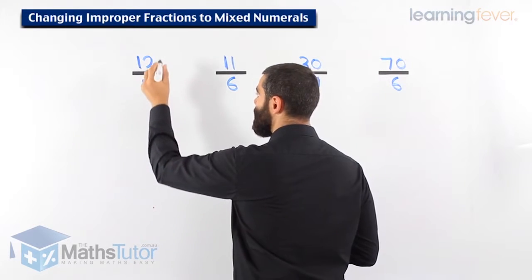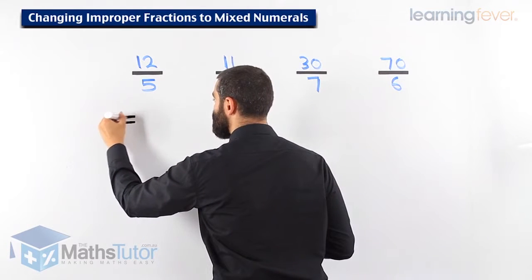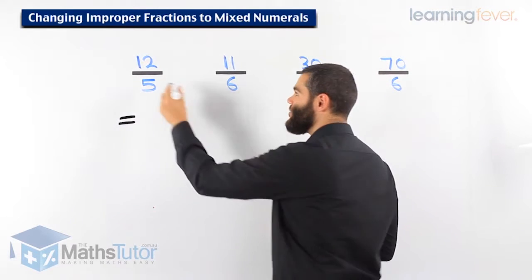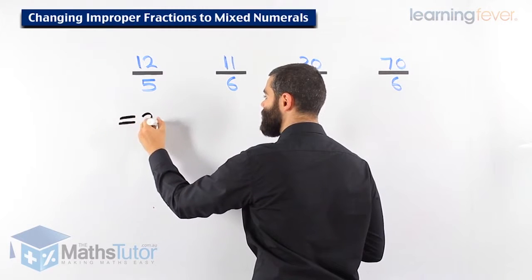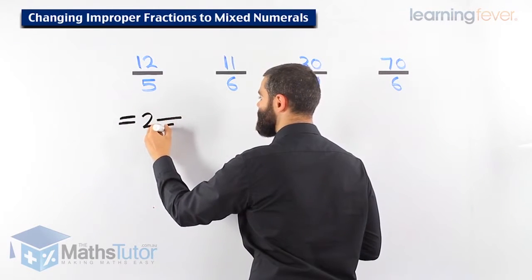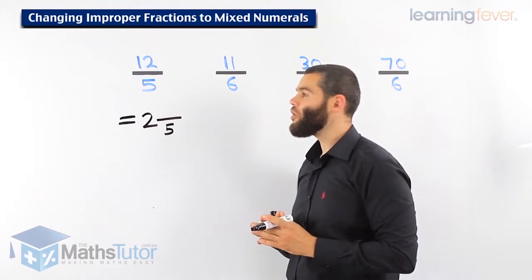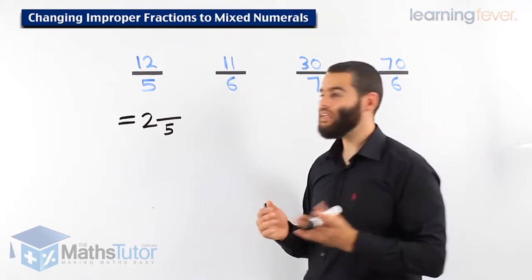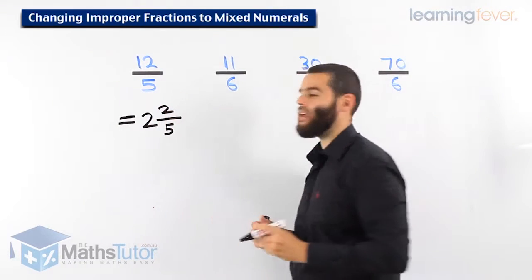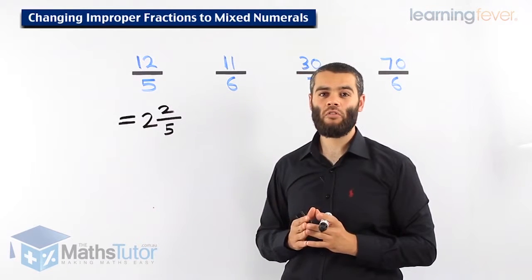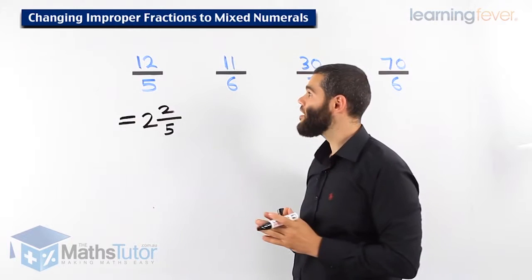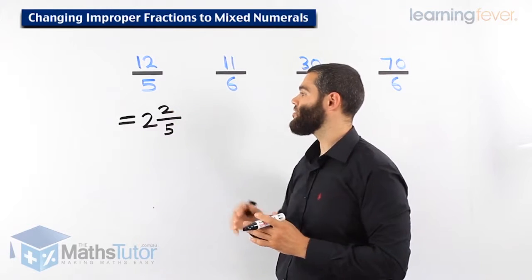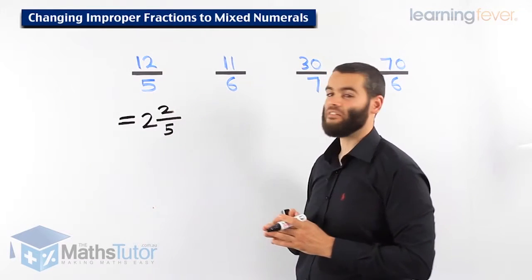12 over 5 as a mixed numeral — how do we write it? Very simple. We ask ourselves, how many 5's go into 12? 2. The denominator stays here. 5 goes into 12 twice, which makes 10. What's remaining? 2 remaining to make 12. There's a remainder of 2 — the remainder goes as the numerator and the denominator stays the same.